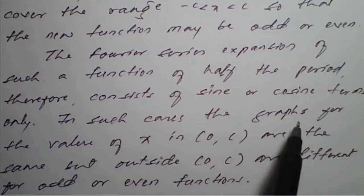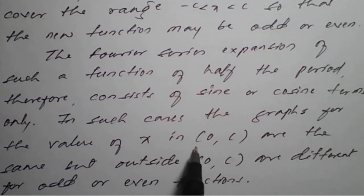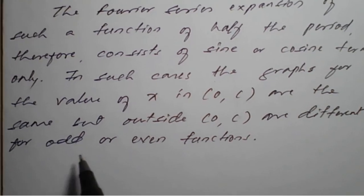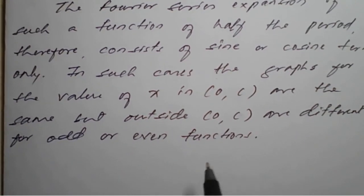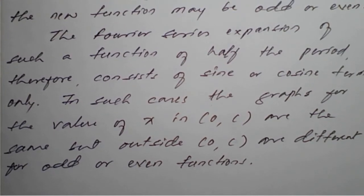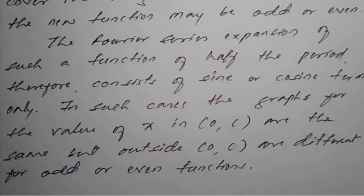Here, in such cases, the graph for value of x in (0, c) are the same, but outside (0, c) are different for odd and even functions. So now we will see what is the exact half range — half range means we have two options: it will be a sine half range series or cosine half range series.